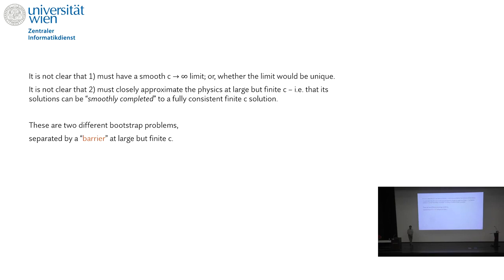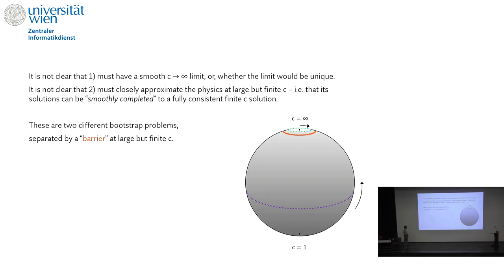It's not clear that the first approach has a smooth limit as C goes to infinity, or whether the limit would be unique. And it's not clear whether the second approach must closely approximate the physics at large but finite C — in other words, that solutions can be smoothly completed to a fully consistent finite C solution. These are two different bootstrap problems, separated by a kind of barrier at some large but finite C.